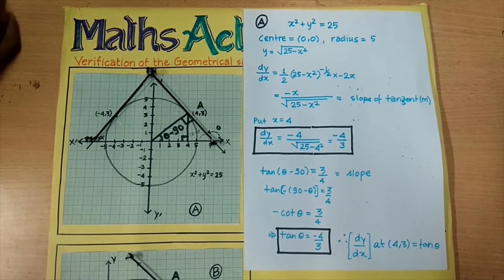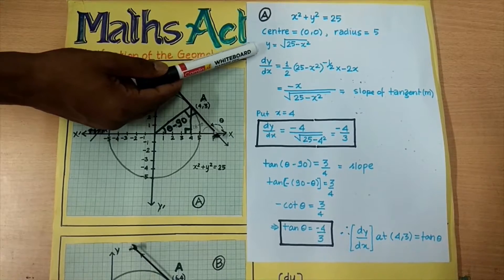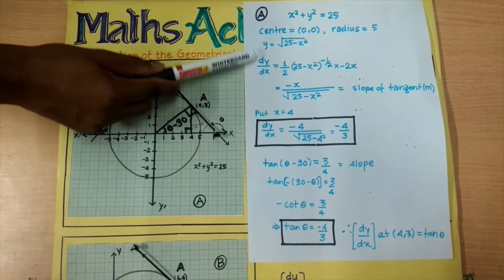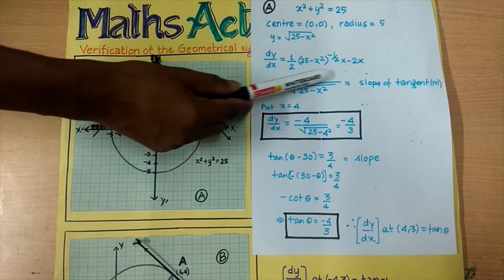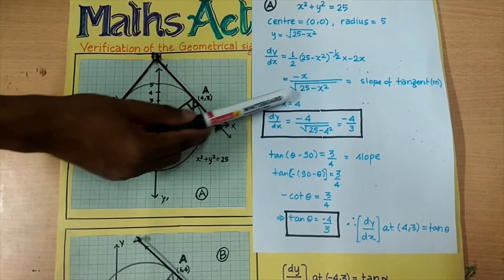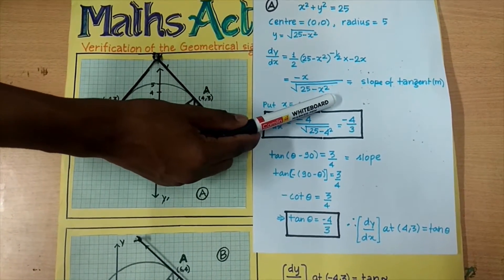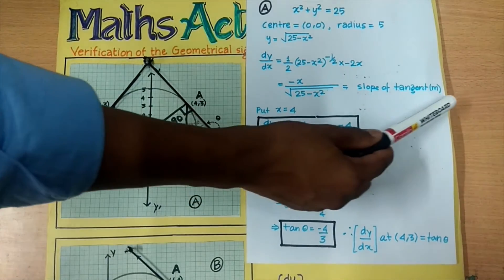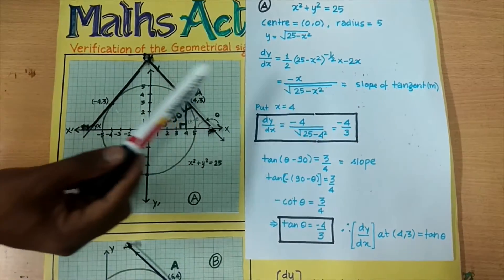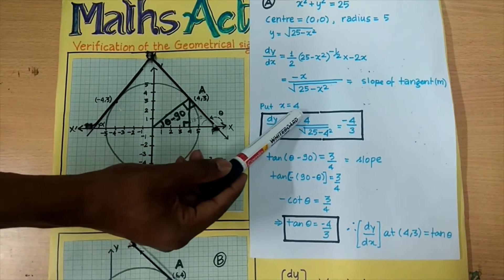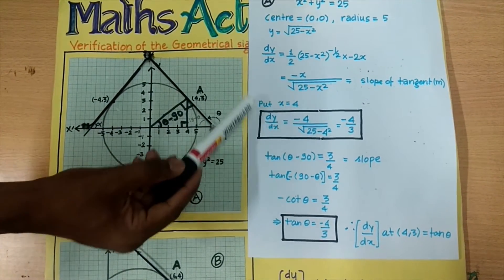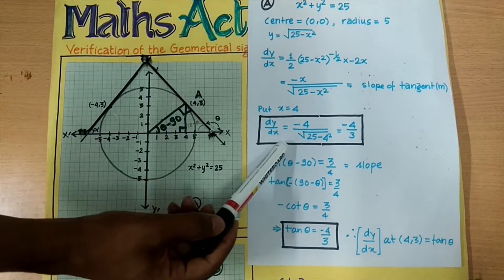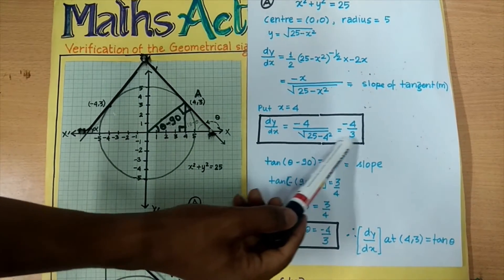We will write the equation of the circle in terms of y. The derivative of y will give the value dy/dx = −x / √(25 − x²), which will be equal to the slope of the tangent. Now we will put x = 4, so dy/dx at (4,3) will give the value −4/3.